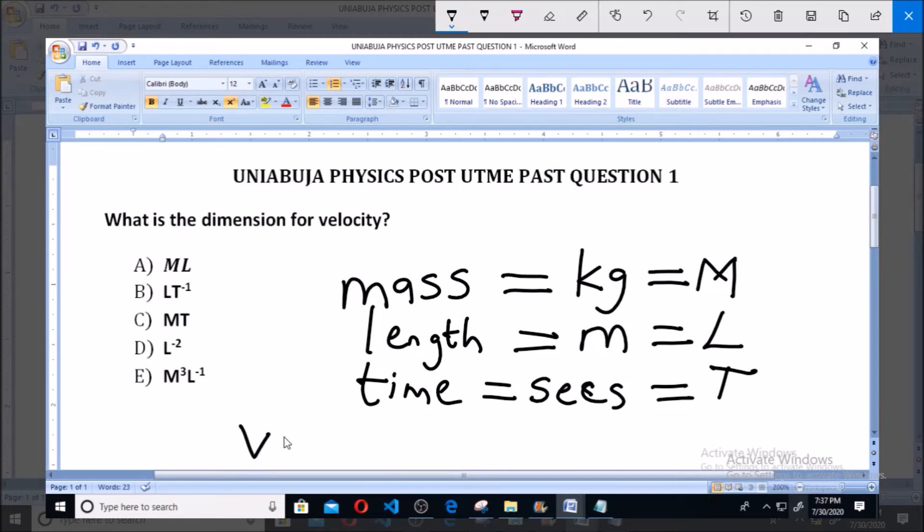You know that velocity is expressed as the displacement over time. Now, displacement over time, displacement is measured in meters, and time is measured in seconds. So, you have meter per second. I'm going to express it this way. This is also meter per second. Now, from what we have here, from the dimension, the basic, the dimension of the basic quantities we have here, we know that meters is a function of length.